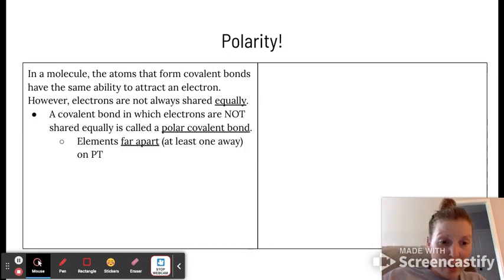If I were to just give you the elements to look at on the periodic table and say determine if this is polar, if they're far apart on the periodic table so at least one element is between them, then that would be a polar bond. The further you get away, the more polar you get until you get into the metals, which would then be ionic bonds.